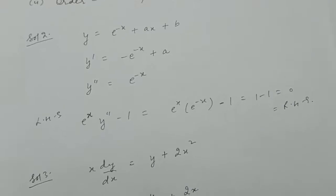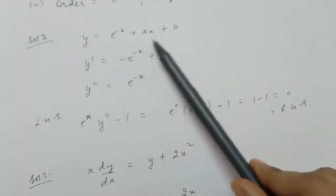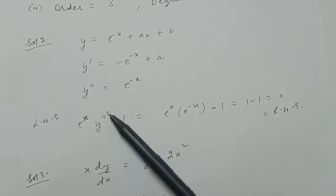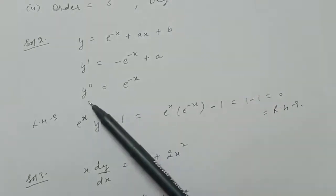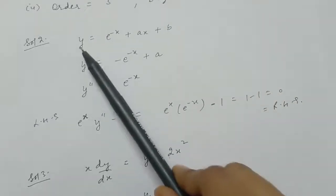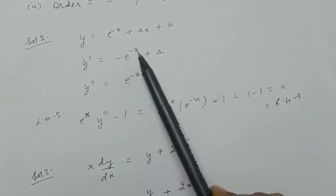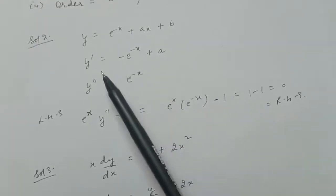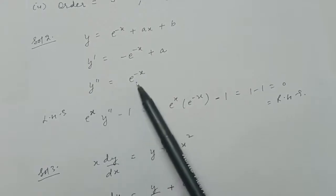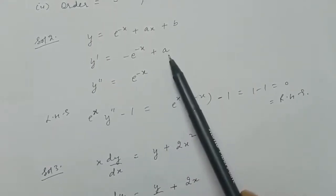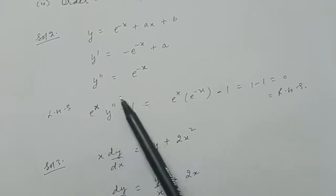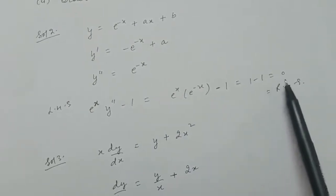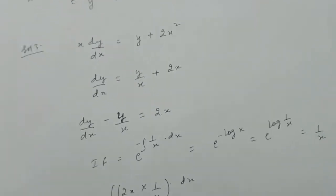In question two, check if y equals e raised to the power minus x plus ax plus b is a solution of the given differential equation. The differential equation includes double derivative of y, so calculate double derivative of y by differentiating both sides. The first derivative y dash equals minus e to the power minus x plus a, and differentiating again gives y double dash equal to e to the power minus x. Substituting into the left-hand side gives 1 minus 1 equal to 0, which equals the right-hand side, so yes, this function is a solution.